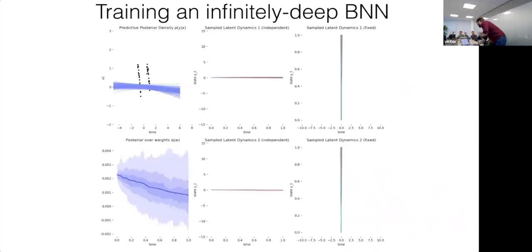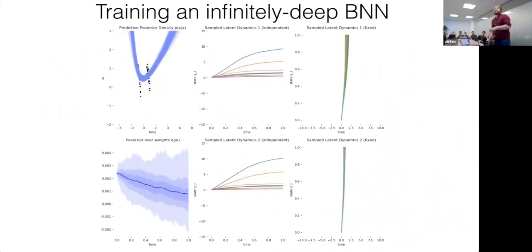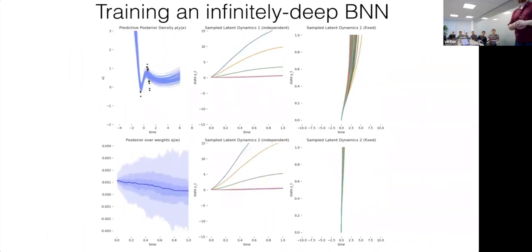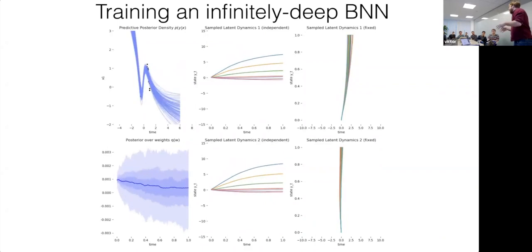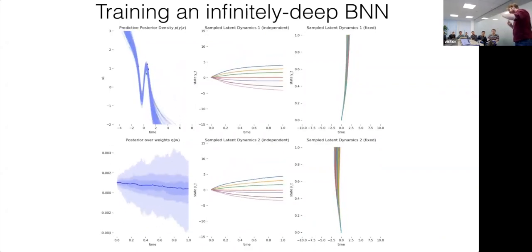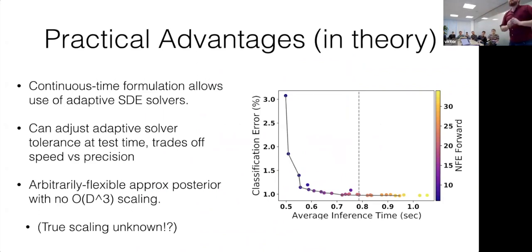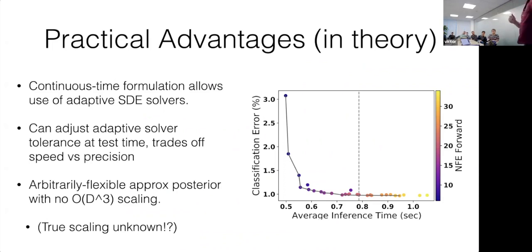The marginal likelihood does roughly the right thing and after a while fits some data. This is all very slow — every time you want to estimate the marginal likelihood you have to run the SDE solver. The beautiful thing about moving to continuous time is having adaptive SDE solvers, which are not as mature as adaptive ODE solvers but slower. They have a tolerance you can tune at test time: looser tolerances run faster.